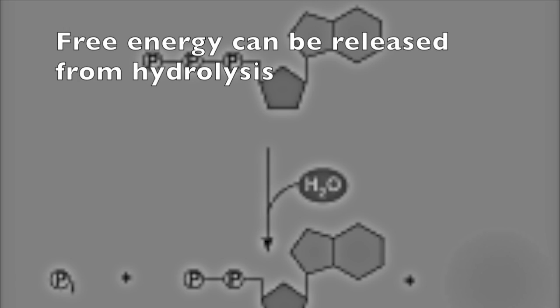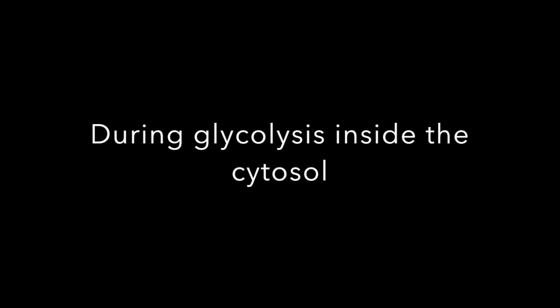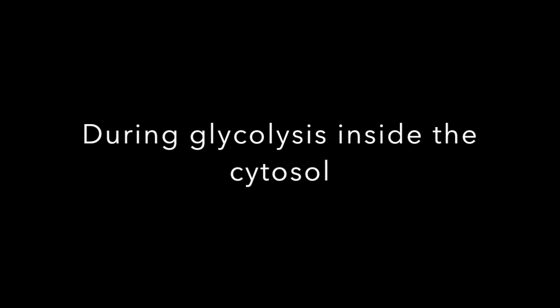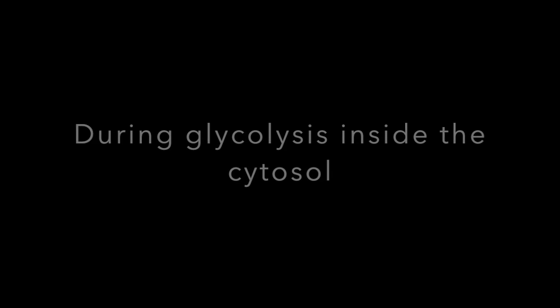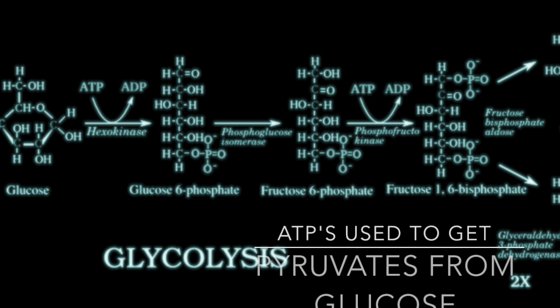ATP stores energy for metabolism. Free energy can be released from it through hydrolysis. During glycolysis inside the cytosol, ATP is used to get pyruvate from glucose.